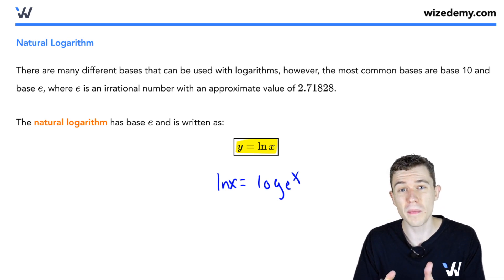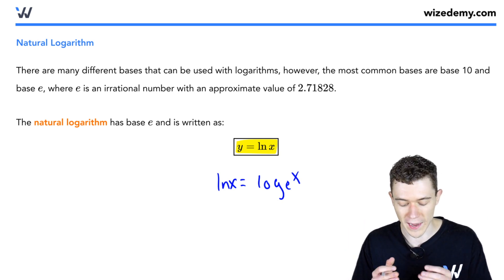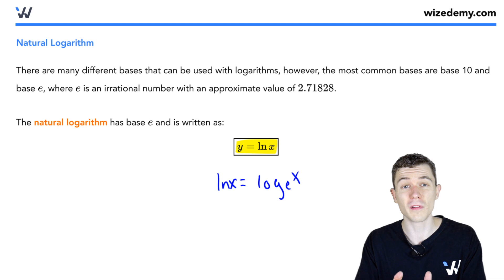This base is so important for exponential functions and logarithmic functions, it gets its own notation. Going forward, if we ever see LN of X, that's the logarithm. It's called the natural logarithm of base E.